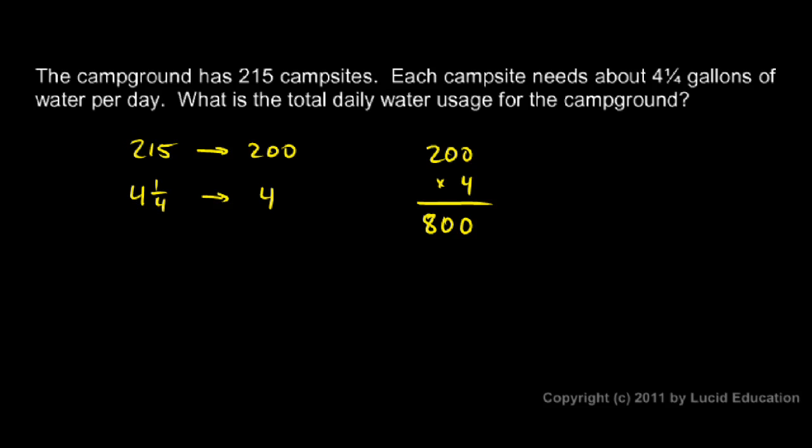The campground typically isn't going to be 100% full, and even if it was, each person probably wouldn't use exactly 4.25 gallons each day. So the exact numbers aren't really necessarily better.